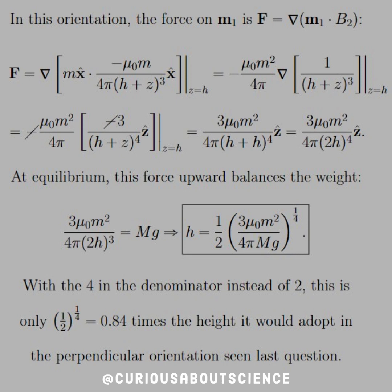We see that factor of 2h to the fourth. At equilibrium, the force upward is balanced by the weight. So we have 3μ_0 m^2 over 4π(2h)^3 equals mg. Solve this for h. We have a factor of one half outside, and we end up with h = (1/2)(3μ_0 m^2 / 4πMg)^(1/4).